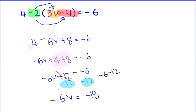Negative 6v is equal to negative 18 because minus 6 minus 12. Then you divide both sides by negative 6 to isolate your variable. So v is equal to 3.